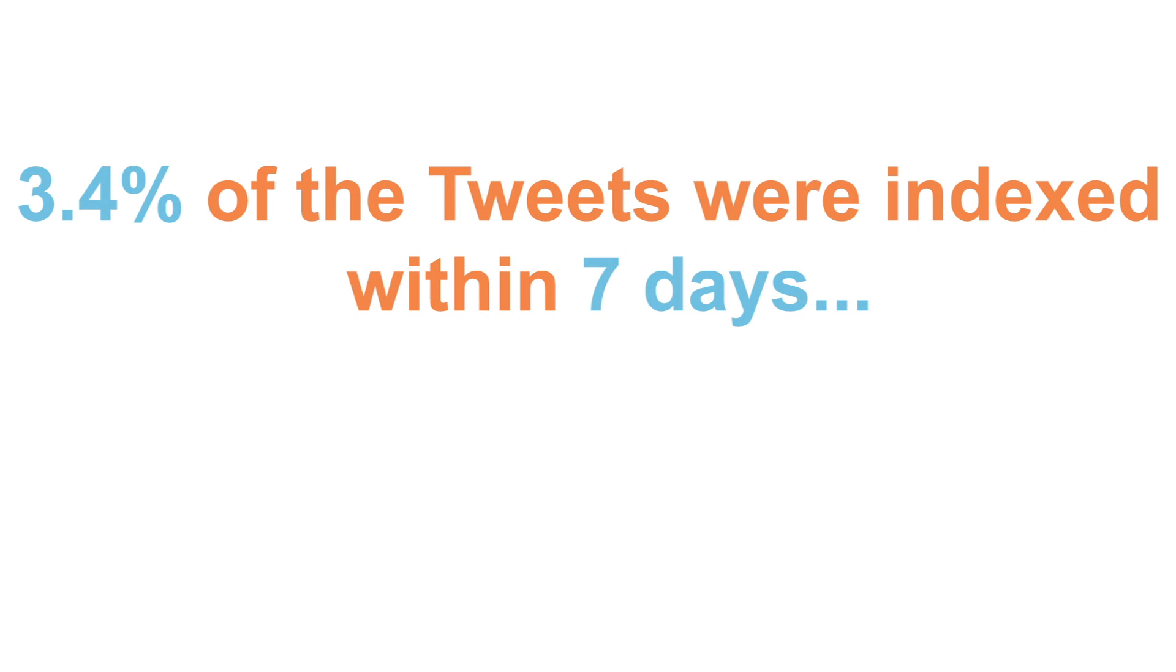For a good comparison, we looked for the same data set of tweets in our June scan. This time, we found that 3.4% of the tweets were indexed within seven days, a whopping 466% increase over February. But of course, 3.4% is still a tiny minority of all the tweets. So now that Google has access to all of Twitter, why aren't they indexing 100% of the tweets?